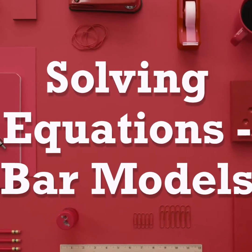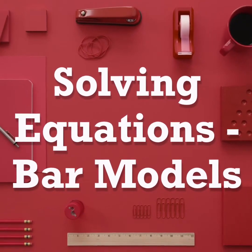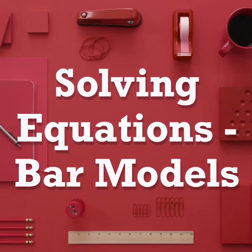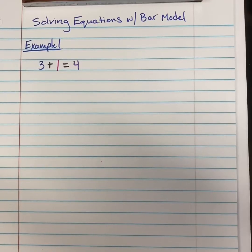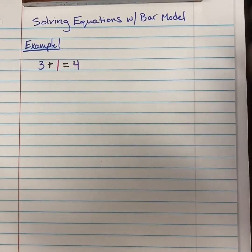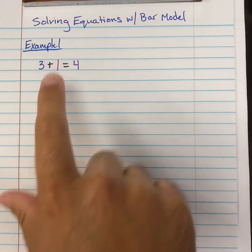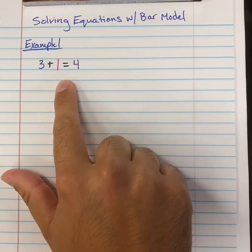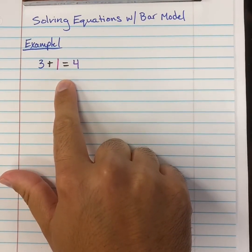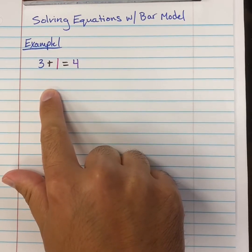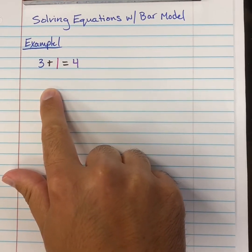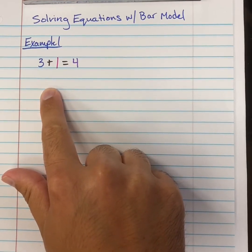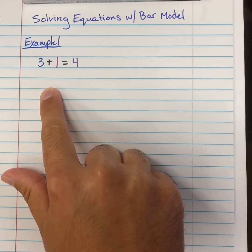In today's video, we are going to be discussing how we could use a bar model in order to solve an equation. So we're solving equations with a bar model. We're going to start out with this first example, and it's not going to have a variable in it because I just want to show you what the bar model actually looks like. So let's go ahead and draw what 3 plus 1 is equal to 4 would actually look like in the bar model.